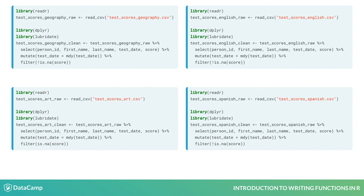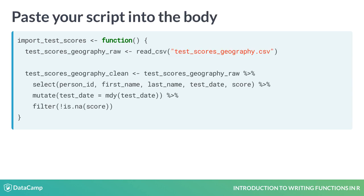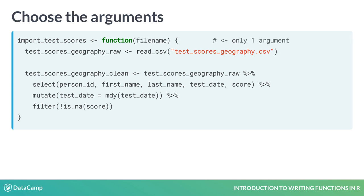Recall the four sets of code for analyzing the test scores. Let's see how all these scripts could be wrapped into a function. To convert a script into a function, you start by writing this template, with the word function followed by parentheses and braces. Next, you paste your script inside the braces. The third step is to choose the arguments to the function. The arguments should be any bits of code that aren't duplicated across your different chunks of code. In this case, the only bit of code that changed between the four blocks was the file name, so that's your only argument.